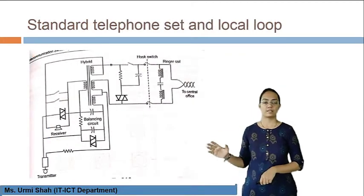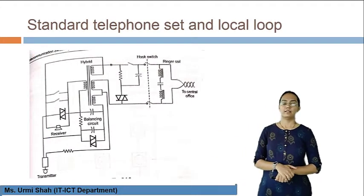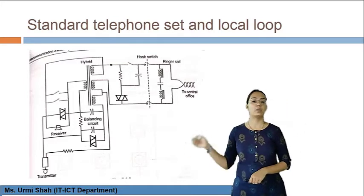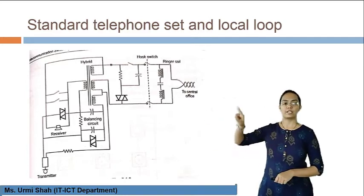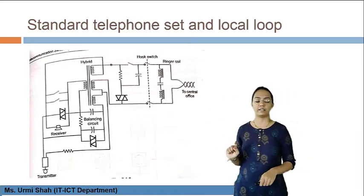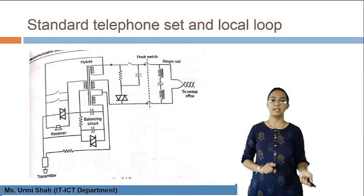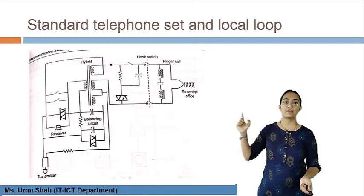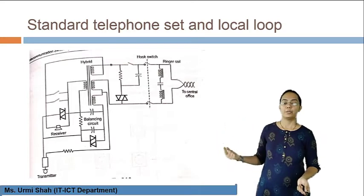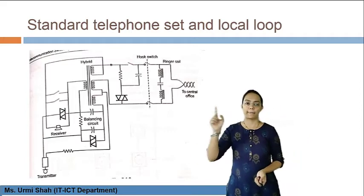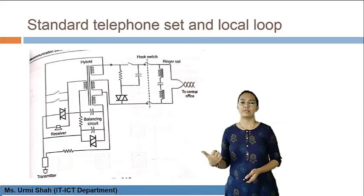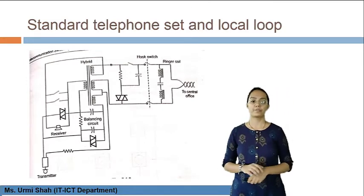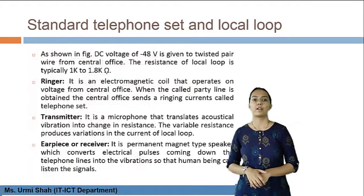This is the diagram of the standard telephone set and local loop. These are the components we have already covered as part of the components of the looping system. The circuit elements involved include diode, RLC parameters, transformer circuitry, looping, and switching — all are part of the standard telephone set as part of the local loop system.